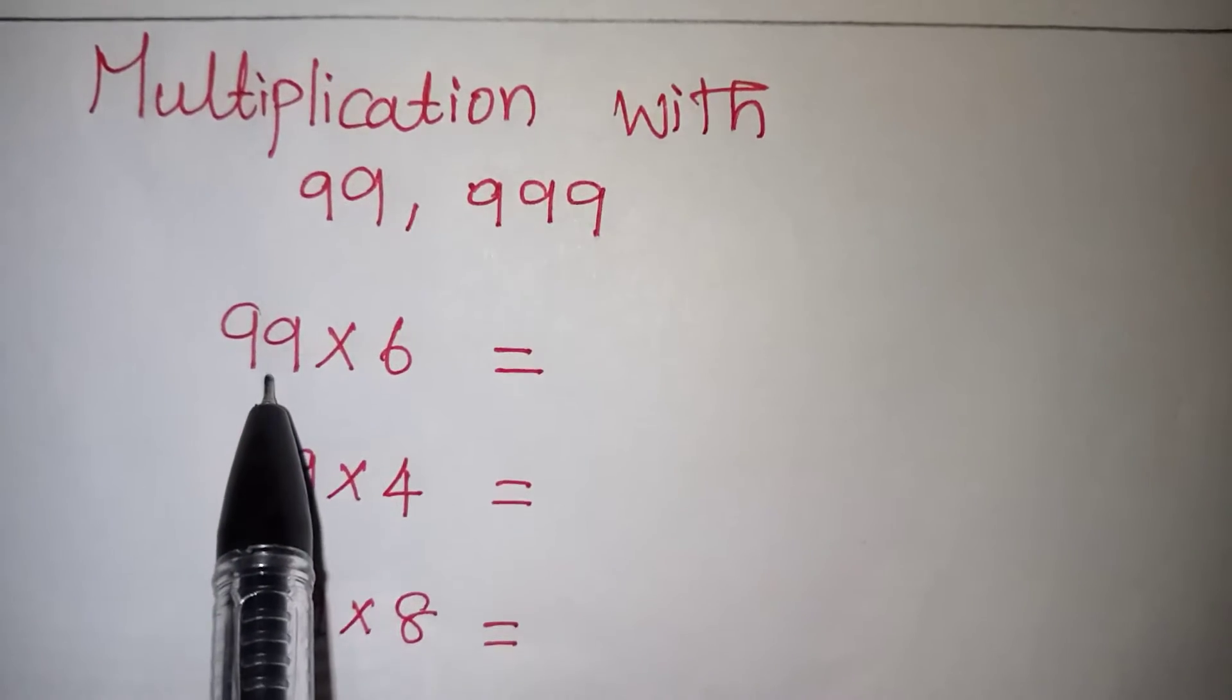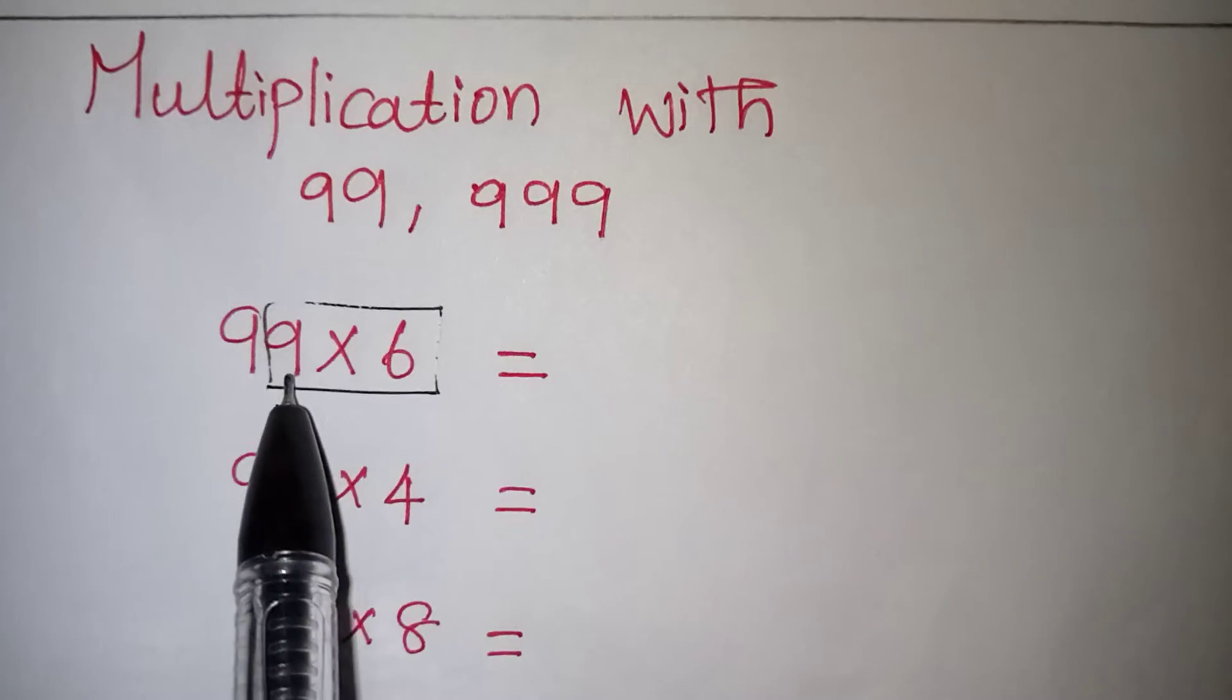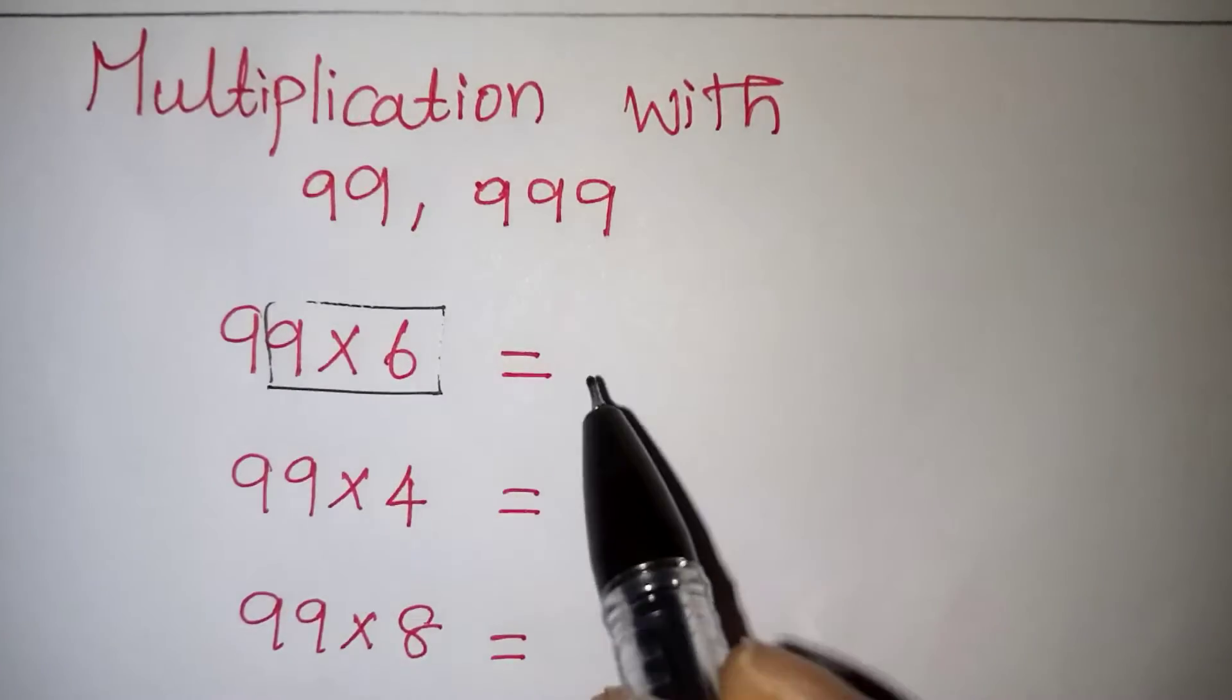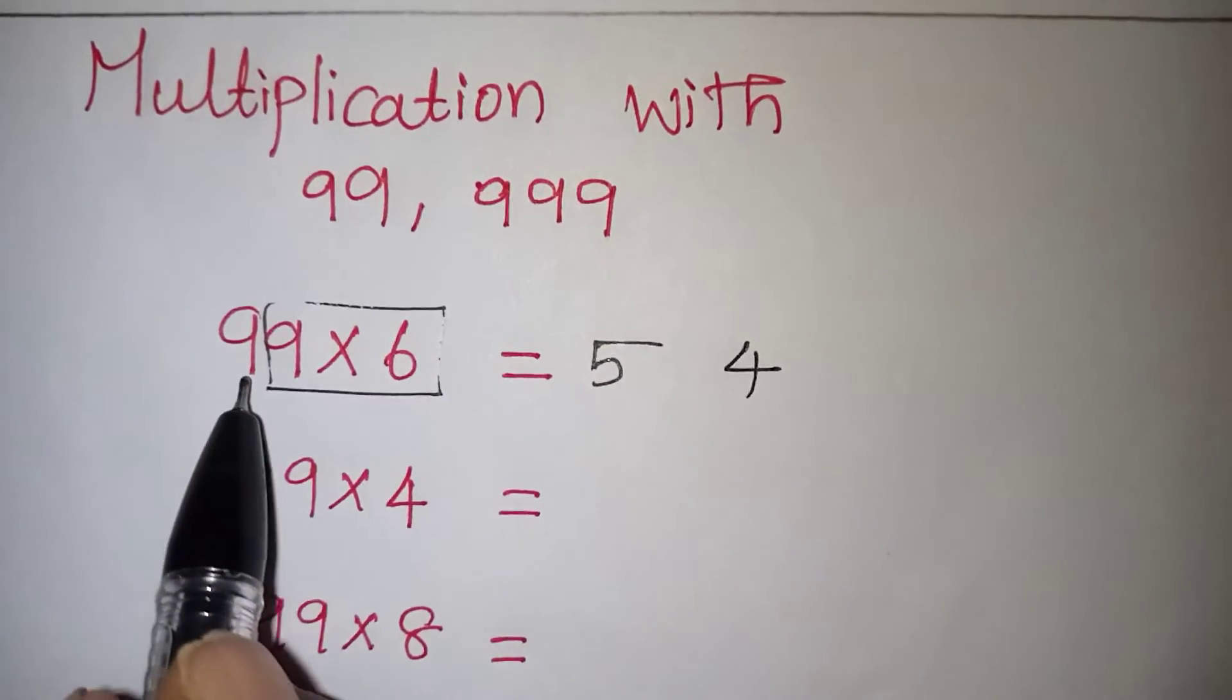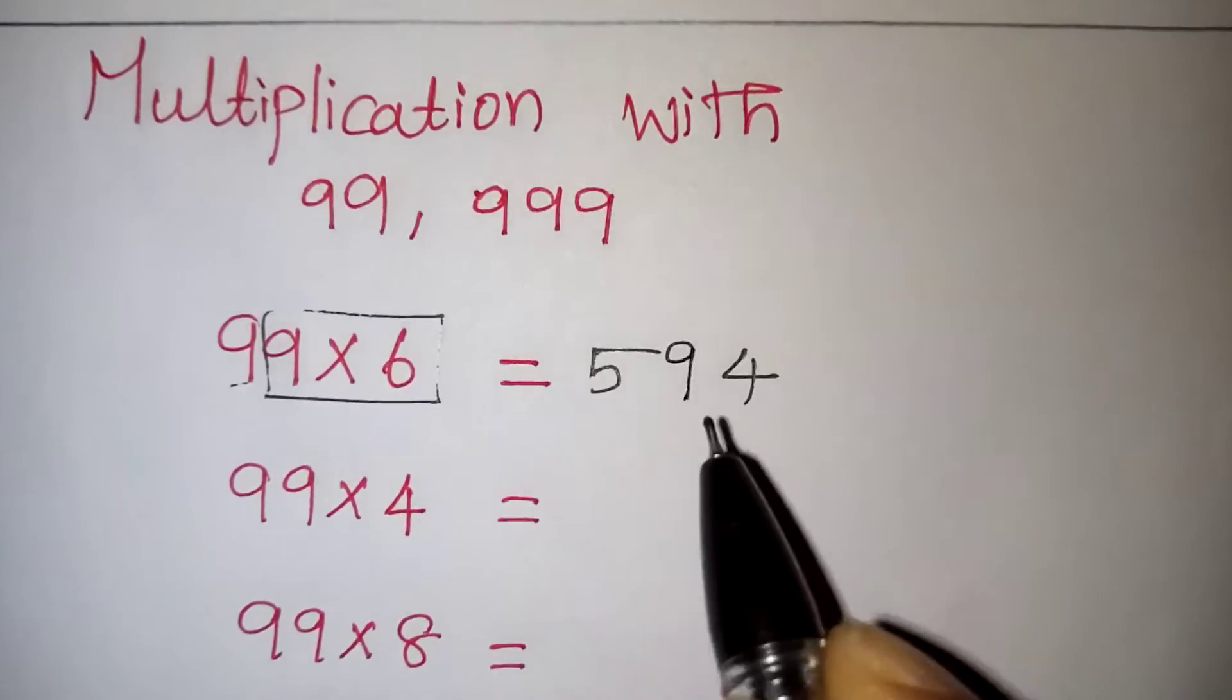So whatever number is given, the first 9 and the number you just select now. So 9 times 6 is 54. Just write the 5 here and 4 here. Now how many 9's are pending here? Only one 9, that should be written in between. That's it.